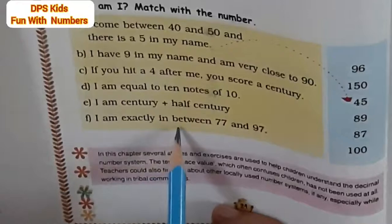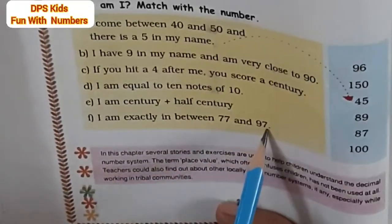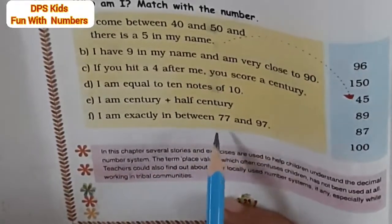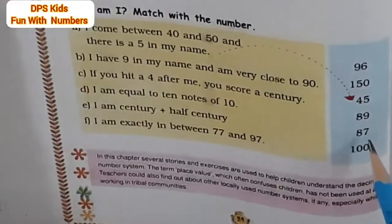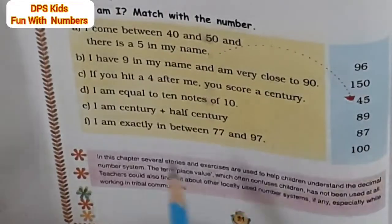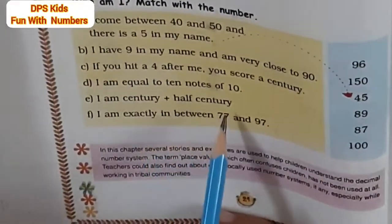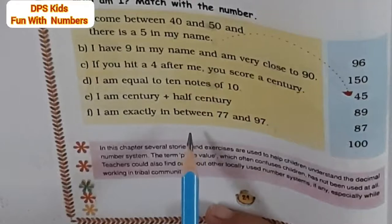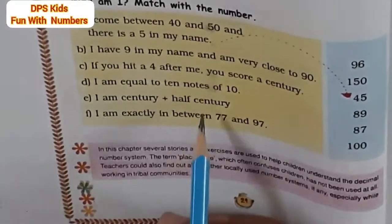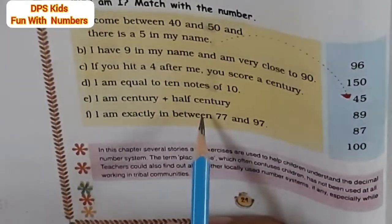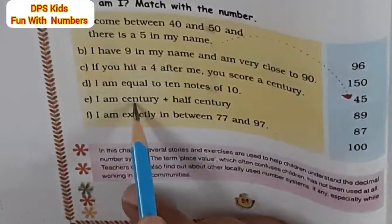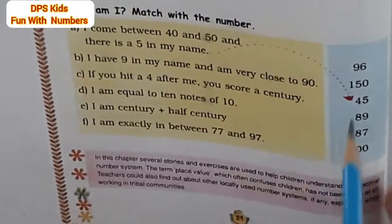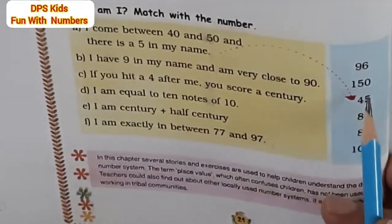I am exactly in between 77 and 97 — match that. I am a century plus half century. Century means 100 and half century means 50. So 100 plus 50, that is 150.